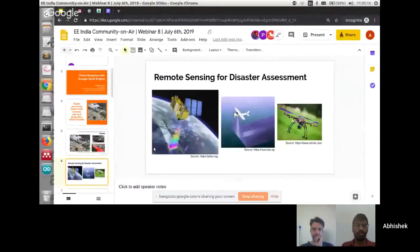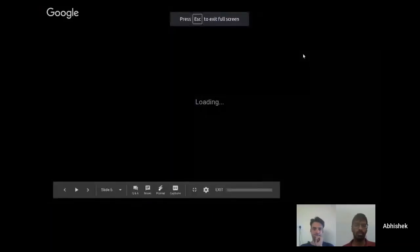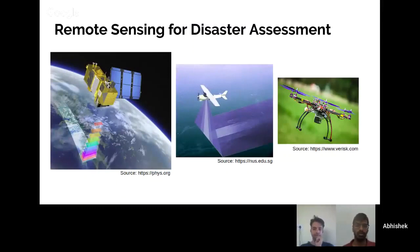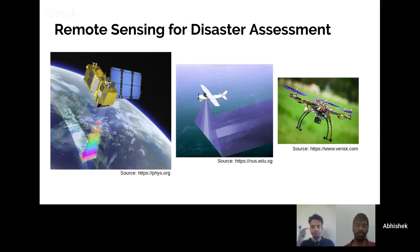These types of remote sensing platforms form an apt choice during a disaster assessment and management scenario, typically when the area on the ground is inaccessible. In case of flooding, one cannot actually go there for surveying and assessing how much loss has been caused and where the damages are due to the floods. So remote sensing platforms form an apt choice for such cases.